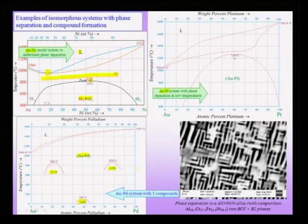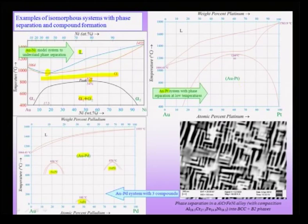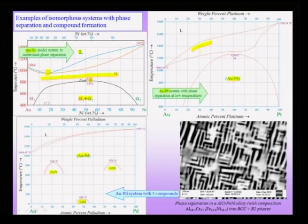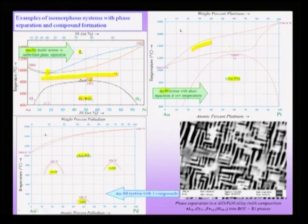Similarly, in the gold-platinum system on the right hand side — again both are noble metals with FCC structure — you have phase separation at low temperatures and an isomorphous diagram with considerable deviation from the ideal double-lens system we had drawn before. So there are considerable non-idealities when you consider real systems.